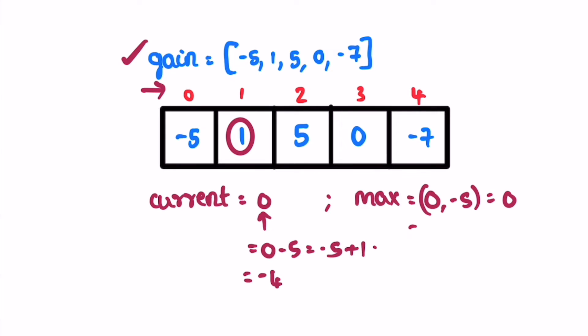We check if zero or minus four is max. Zero is still the max. Now we go for the next element. The next element is five.